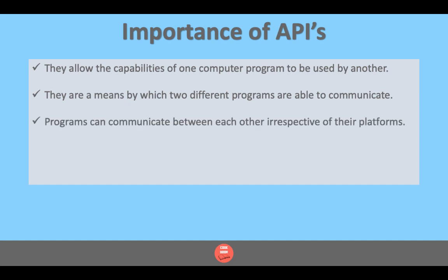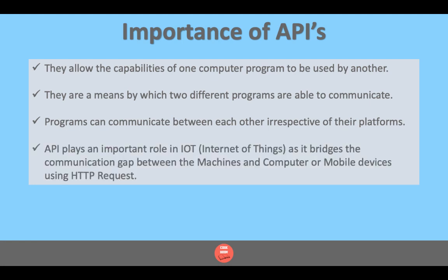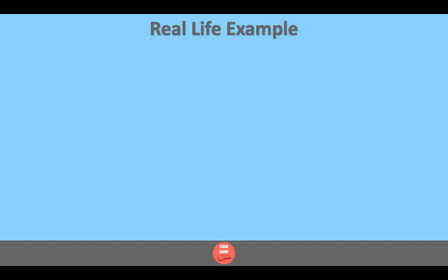An API plays an important role in IoT — Internet of Things — as it bridges the communication gap between machines and computer or mobile devices using HTTP requests.